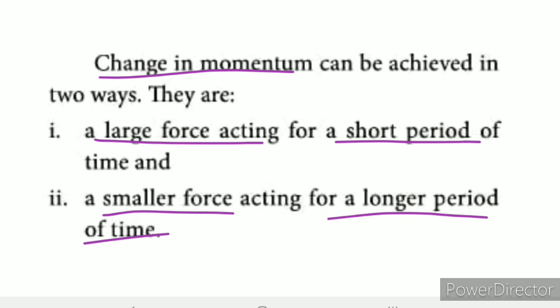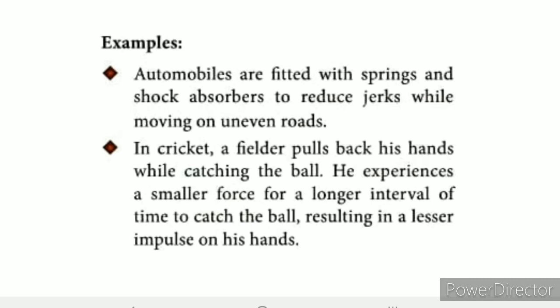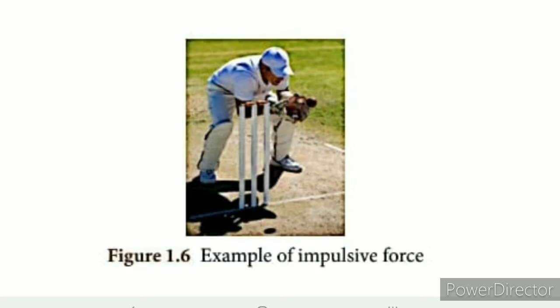Here are some examples. Automobiles are fitted with springs and shock absorbers to reduce jerks while moving on uneven roads. We have shock absorbers on two wheelers to absorb large forces so the backbone won't be affected.